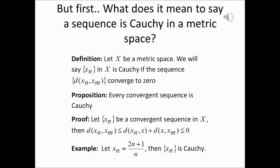Because the sequence converges to 2, in the limit as n goes to infinity the distance between the n-th term and 2 goes to zero, and in the limit as m goes to infinity the distance between 2 and the m-th term goes to zero. So the distance between the n-th term and the m-th term is less than or equal to zero. Since distance is non-negative, it must equal zero, which means the sequence is Cauchy.